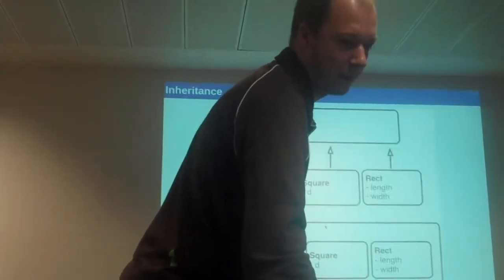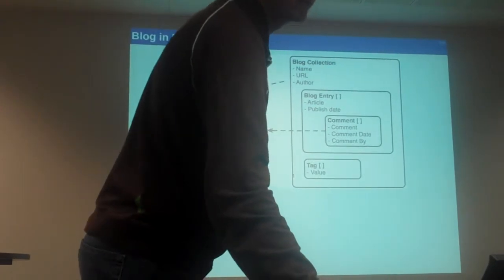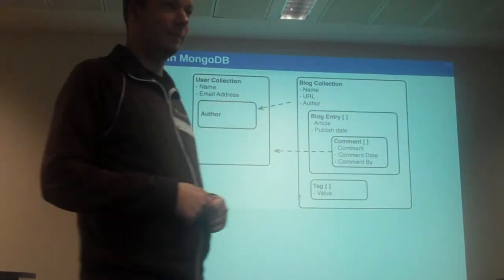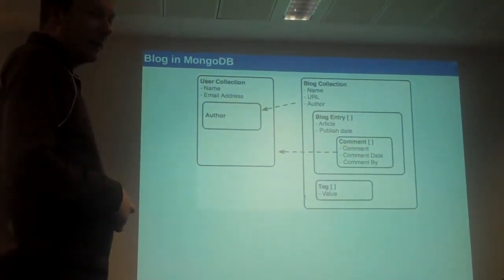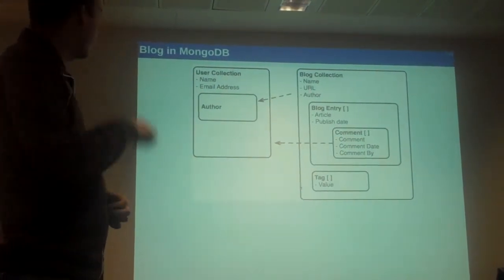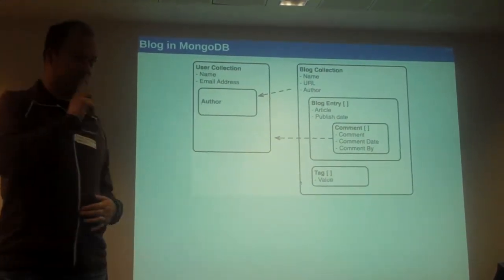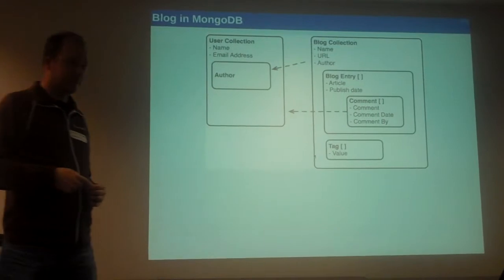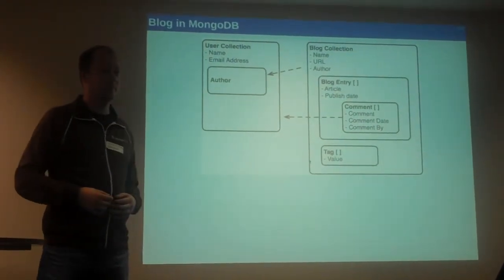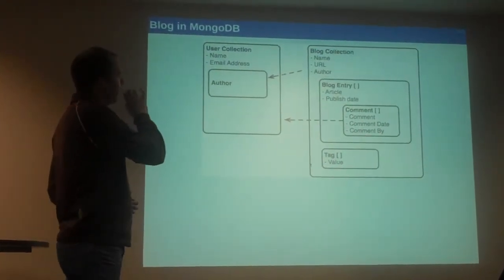The blog example, there was one document that contains this and then there seems to be a relation to user collection. So I guess I keep coming back to relational analogy, but how is the blog collection linked to a user collection?